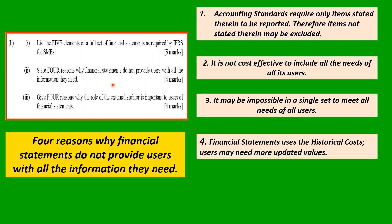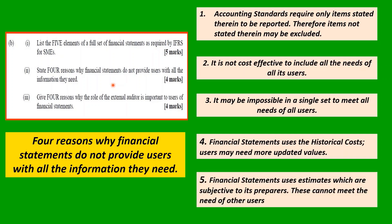Fourth: financial statements use historical cost, but users may need more updated values. I've added a fifth: financial statements use estimates which are subjective to their preparers and cannot meet the needs of other users. The accountants who prepare them use a certain degree of subjectiveness when estimating, and any other accountant estimating might come to a different value — so you can have any number of estimates on a particular item.